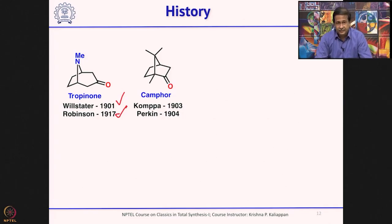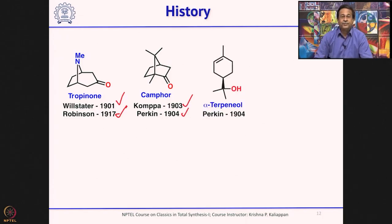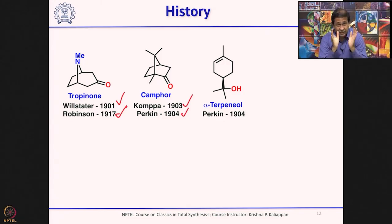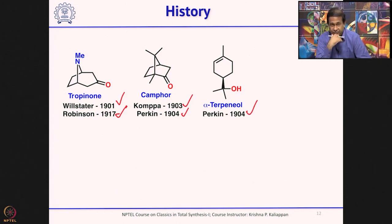Two years later, camphor — which is a monoterpene we all know — was reported by Combes, and a year later Perkin also synthesized camphor. So the first decade of the 20th century saw three reasonably complex molecules, considering the time frame. The third molecule, again reported by Perkin, was the synthesis of alpha-terpineol, another monoterpene.